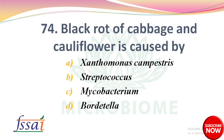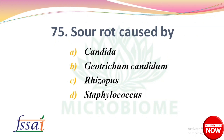Black rot of cabbage and cauliflower is caused by? Options: A) Xanthomonas campestris, B) Streptococcus, C) Mycobacterium, D) Bordetella. The right answer is option A: Xanthomonas campestris. Sour rot is caused by? Options: A) Candida, B) Geotrichum candidum, C) Rhizopus, D) Staphylococcus. The right answer is option B: Geotrichum candidum.